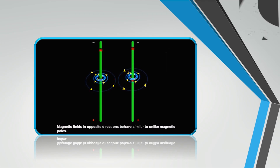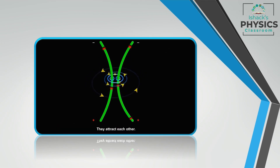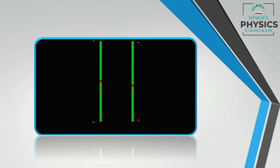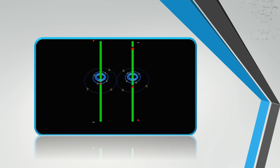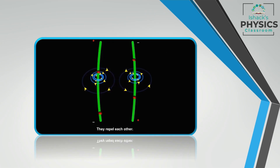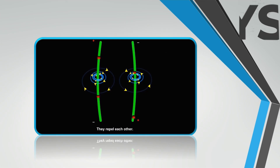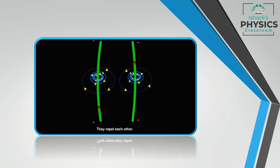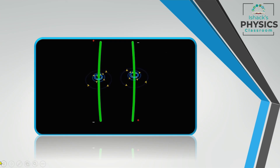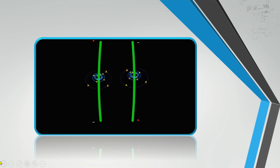When two parallel current-carrying conductors carry current in the same direction, they attract each other. When they carry current in opposite directions — anti-parallel currents — they repel each other. This is similar to magnetic poles: like poles repel and unlike poles attract. So, parallel currents attract and anti-parallel currents repel.